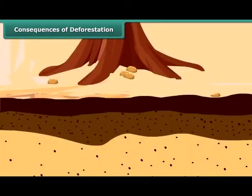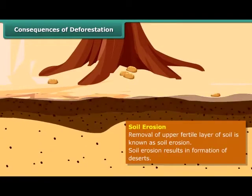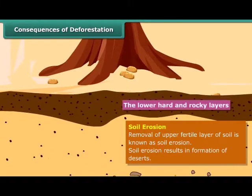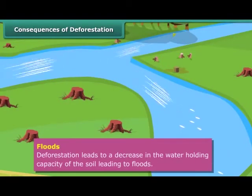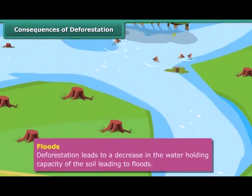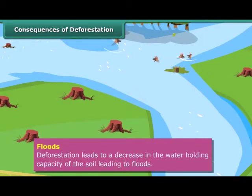Soil erosion: Few trees result in more soil erosion. Removal of the top layers of soil exposes the lower hard and rocky layers. This layer of soil has less humus and is less fertile. Gradually, the fertile land gets converted into deserts — it is called desertification. Floods: Deforestation also leads to a decrease in the water holding capacity of the soil. The movement of water from the soil surface into the ground is reduced, resulting in floods.